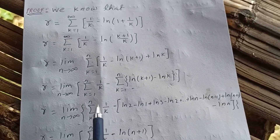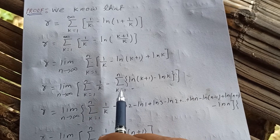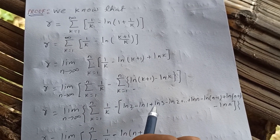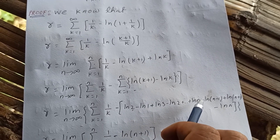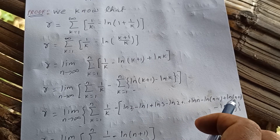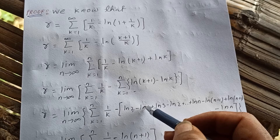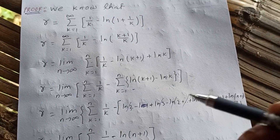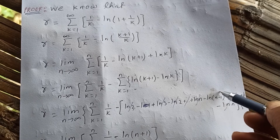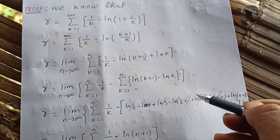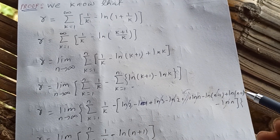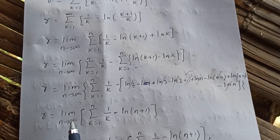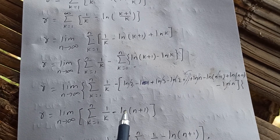So gamma equals the limit as n approaches infinity of the sum from k equals one to n of one over k, minus the expansion: at k equals one, log two minus log one, plus log three minus log two, and so on, plus log n minus log n minus one, plus log n plus one minus log n. This is a telescoping sum — each term cancels with the next, and we are left with natural log of n plus one only. So the Euler-Mascheroni constant equals the limit as n approaches infinity of the sum from k equals one to n of one over k minus natural log of n plus one. This is the proof.